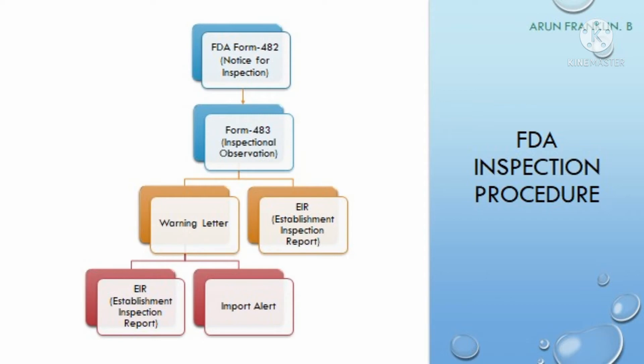If the FDA auditor finds any issues with the six systems, they will issue Form 483, which is called the Inspectional Observations. They will issue Form 483 and then return to their own country. Once the pharmaceutical company receives Form 483, they have to respond to it within 15 working days.